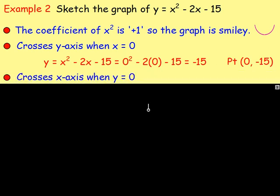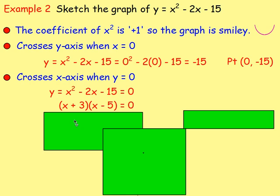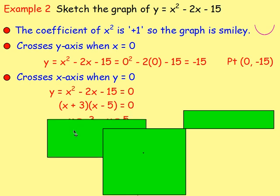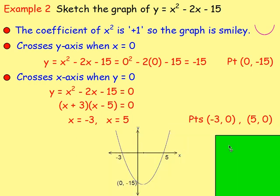To find where it crosses the x-axis, let y equal zero: zero equals x squared minus 2x minus 15. Factorizing gives (x plus 3)(x minus 5) equals zero. So x equals negative 3 or x equals 5, giving crossing points at (−3, 0) and (5, 0).